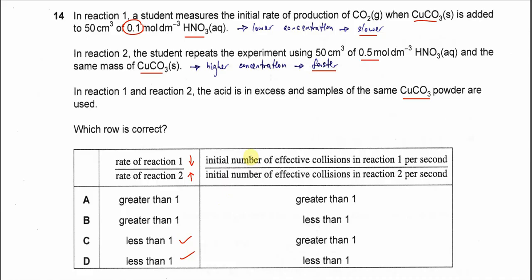Looking at the right-hand side, the initial number of effective collisions in reaction one per second is lower. For the second reaction, the initial number of effective collisions will be higher. Therefore, this ratio is also going to be less than one.